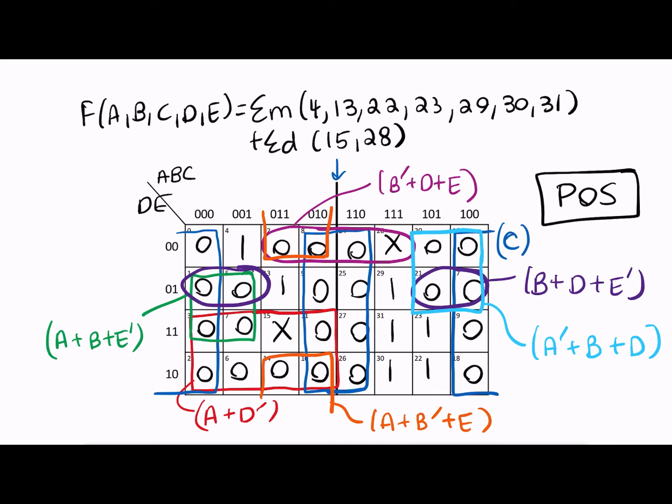The last prime implicant that we can make with max term 20 is, again, another one that doesn't see its reflection on the left-hand side. Otherwise, we would have already found it. So this one is just that hot dog here with 16, 20, 24, and 28. So A is equal to 1 everywhere on this loop, and then B changes, C changes, D is 0, E is 0.